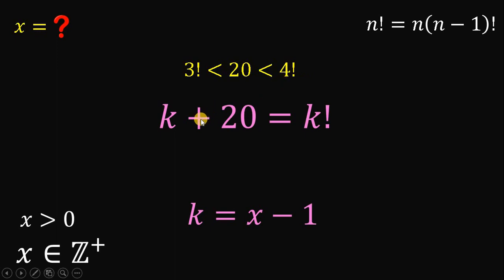What if k must be 3? So, 3 plus 20 is 23 and 3 factorial is just 6. 3 factorial is less than 23. So k is not equal to 3. How about k equals 4? Now, 4 plus 20 is 24 and we know 4 factorial is 24 also. Therefore, this equation holds true.